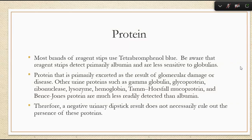So we're detecting the color change because of the error that the protein causes in the reagent strip. We typically use tetrabromophenol blue. Reagent strips primarily detect albumin and are less sensitive to globulins. We're typically seeing protein because of glomerular damage — something has happened to the kidneys, whether physical trauma or disease. We can also see gamma globulins, glycoproteins, lysozymes, hemoglobin, and Bence Jones proteins, which are much less readily detected than albumin.